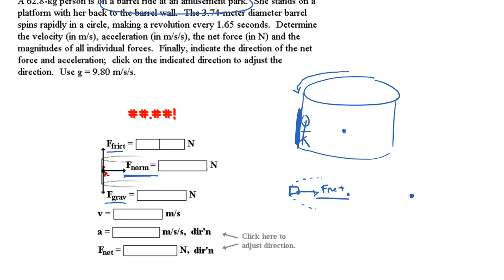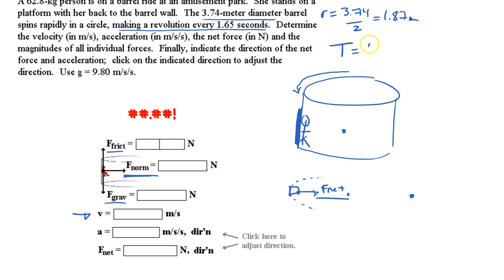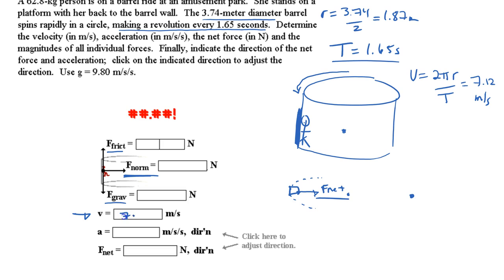They give you the diameter, so radius = 3.74/2 = 1.87 meters. The period T = 1.65 seconds. Velocity = 2πr/T, giving approximately 7.12 meters per second.